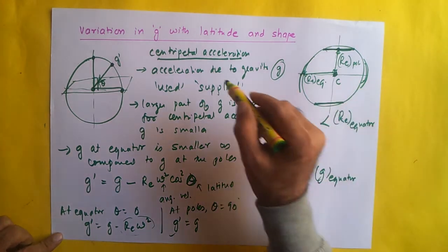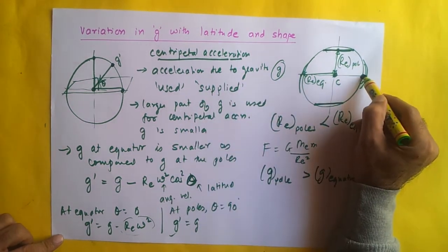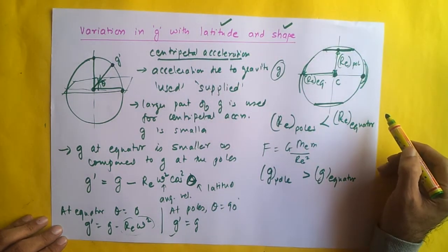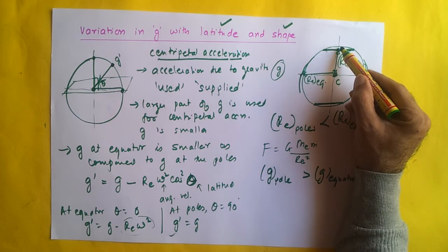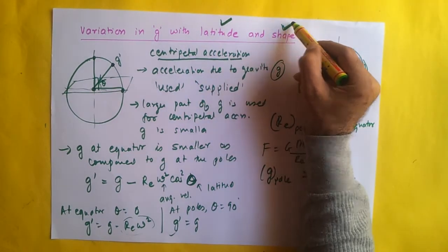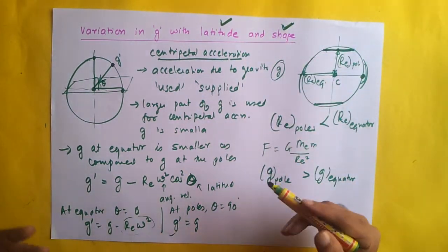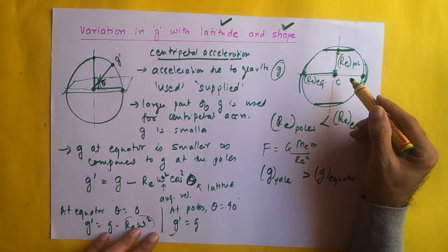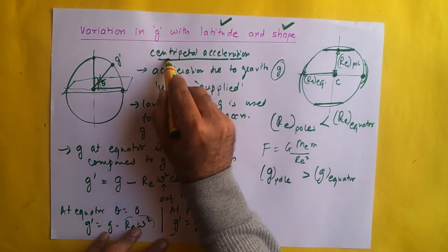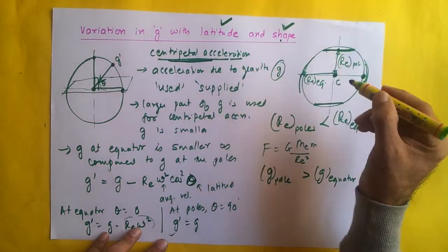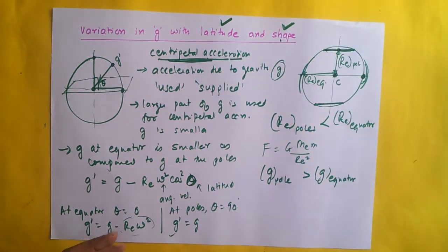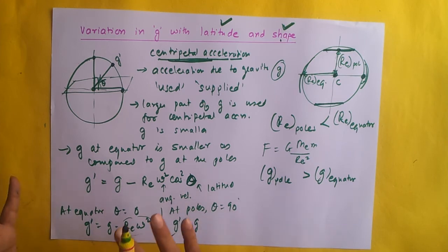What this means is that the value of G at the equator is small both because of latitude as well as the shape of the earth, whereas the value of G is larger at the poles both because of the effect of latitude and the effect of shape. In other words, the value of G is smaller at the equator due to both centripetal acceleration and shape, while at the poles both effects ensure that the value of G is higher. This is how G varies with latitude and shape.